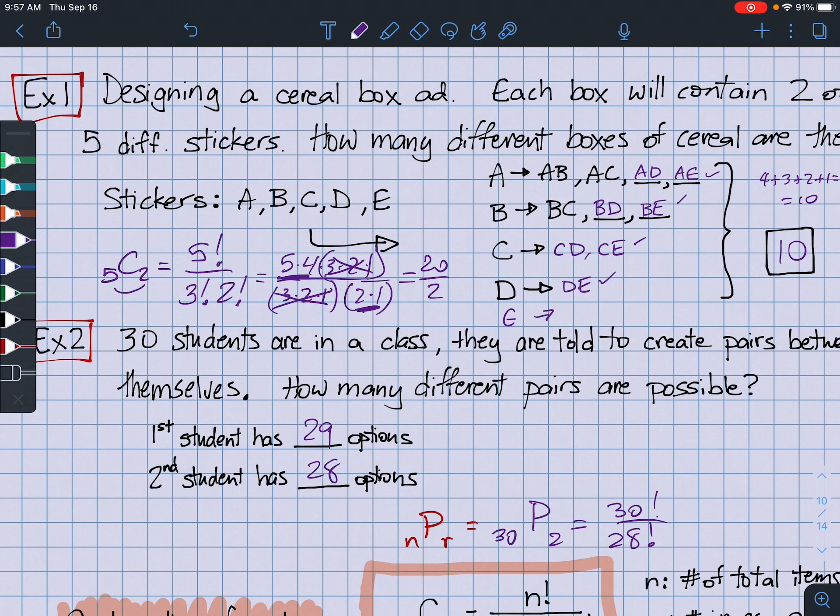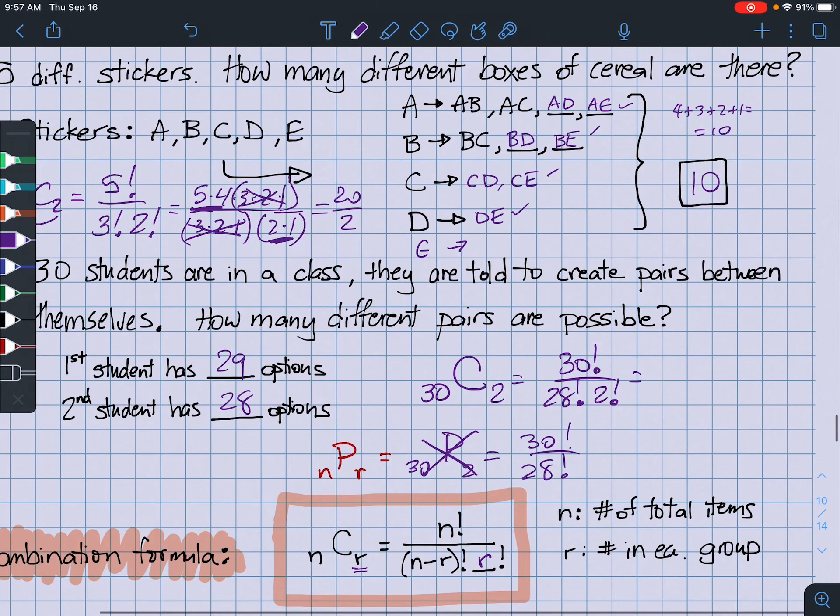And, if I was doing the 30 students, creating pairs, I would do 30, and not pick this time, right? We would do choose-two. And, it would be 30 factorial over 28 factorial and then 2 factorial. And, that's going to be 30 times 29 over 2 times 1. So, whatever that is on my calculator, I get 435 ways for there to count pairs of students in a particular classroom of 30 students.